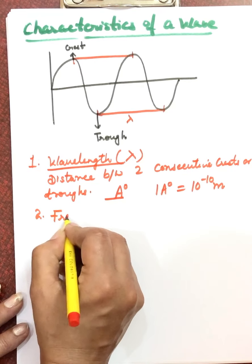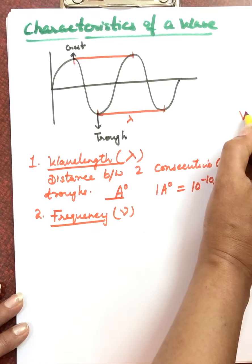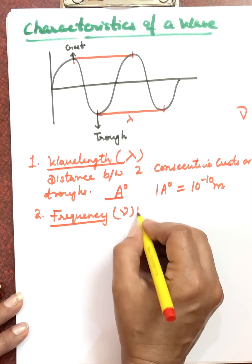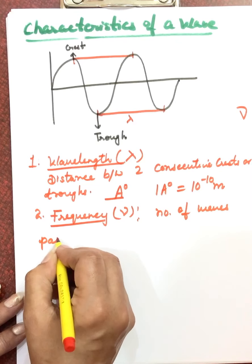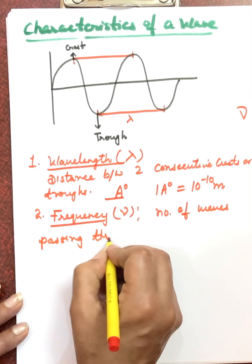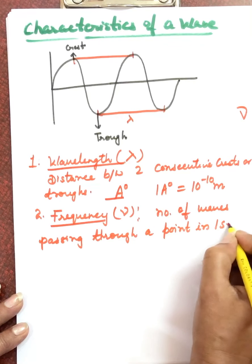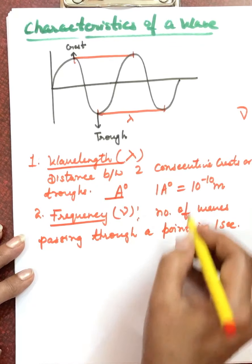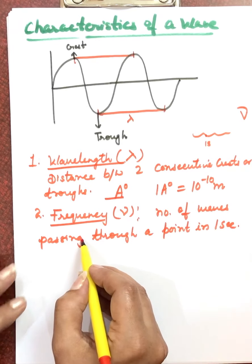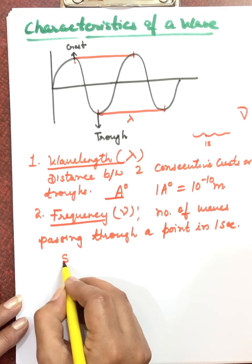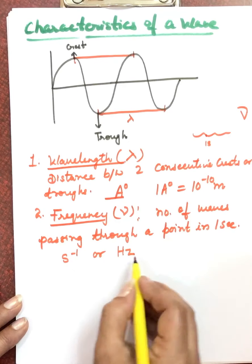The second characteristic is frequency, denoted by the symbol nu (ν). Frequency means the number of waves passing through a point in one second. For example, from a given point, in one second how many waves can pass — that is its frequency. It is expressed in per second, or hertz.